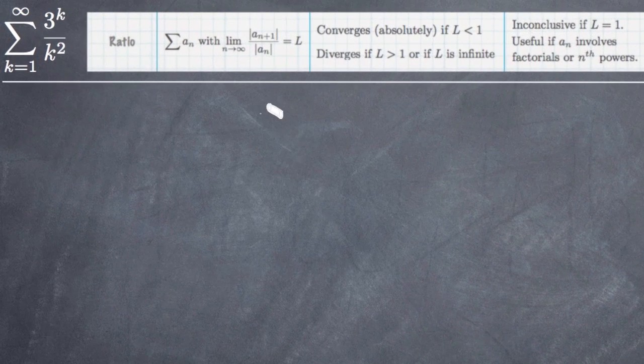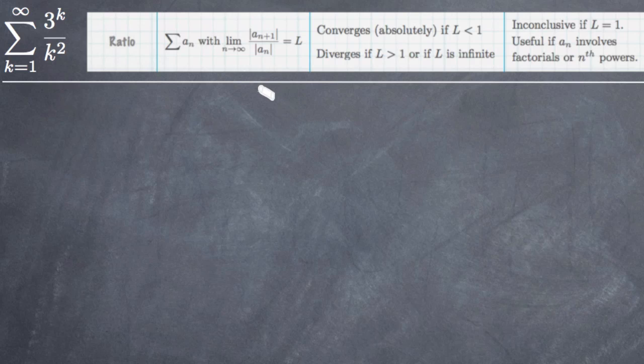So I've taken this screen grab from a table that I have on my website that talks about the different convergence tests. And what it shows us is that when we have a series, we'll call it A sub n, in order to determine whether or not it converges, what we can do using the ratio test is plug k plus 1 in for k. In this case our variable is k. We can plug k plus 1 in for k and take that entire function and divide it by our original function.